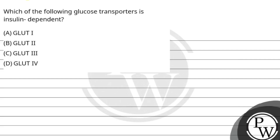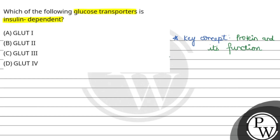Let's take this question. The question says: which of the following glucose transporters is insulin-dependent? We have 4 glucose transporters and we have to tell which one is insulin-dependent. For this question, we have to know our key concept about protein and its function, and also about the GLUT glucose transporters.